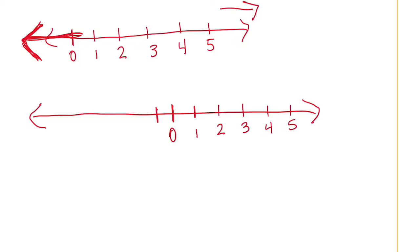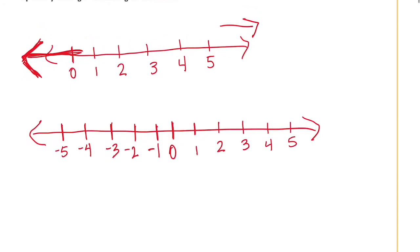So if we want to go to the left, we would have our negative numbers. So this would be negative 1, negative 2, negative 3, negative 4, negative 5. So there is a number line that is going from negatives to positives in both directions.